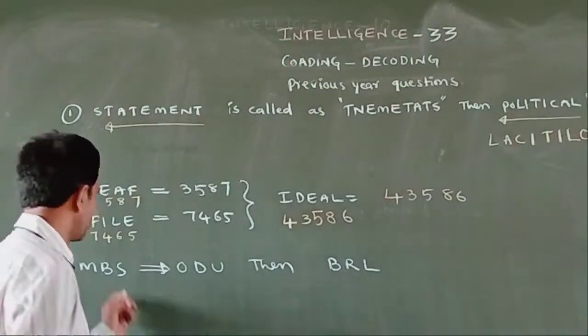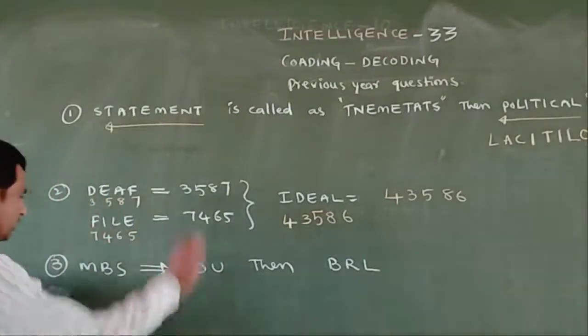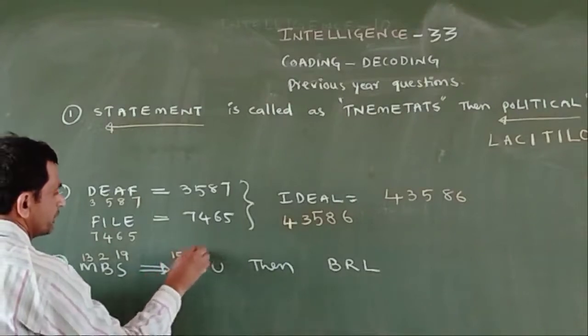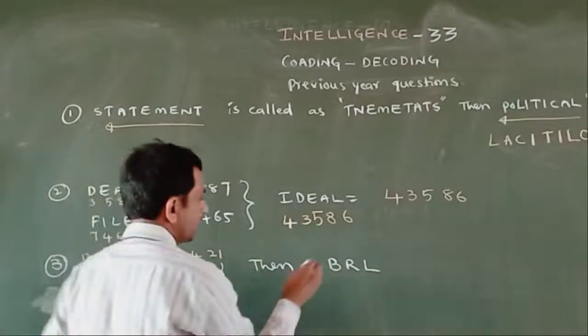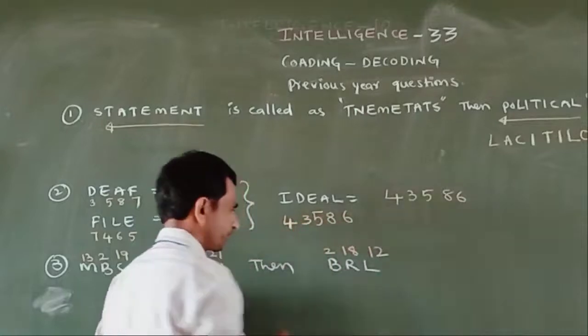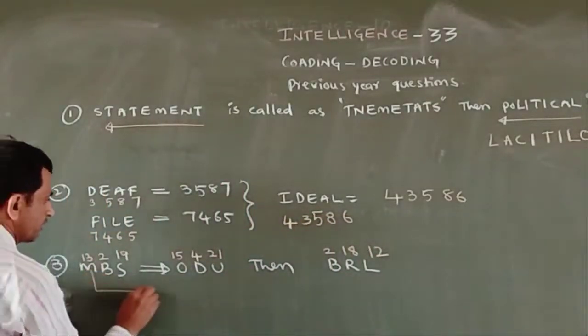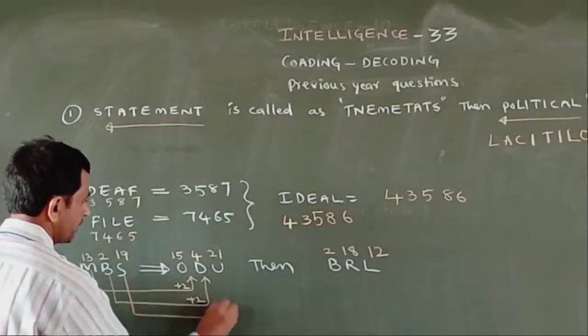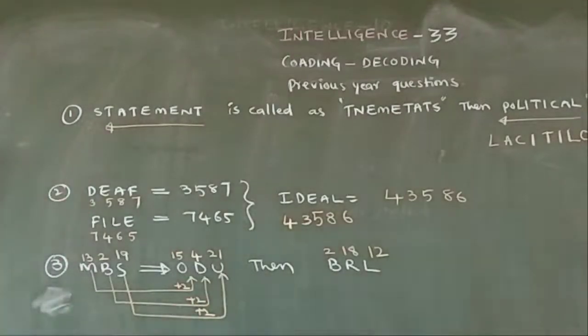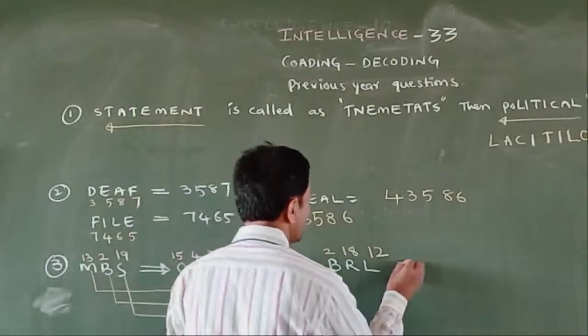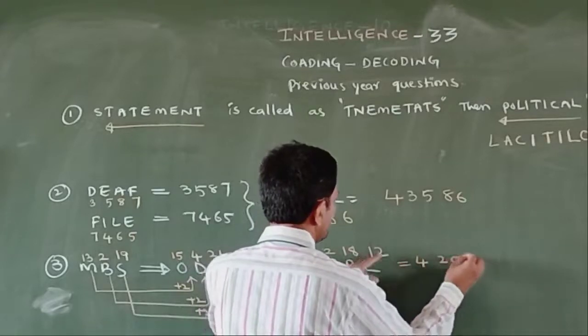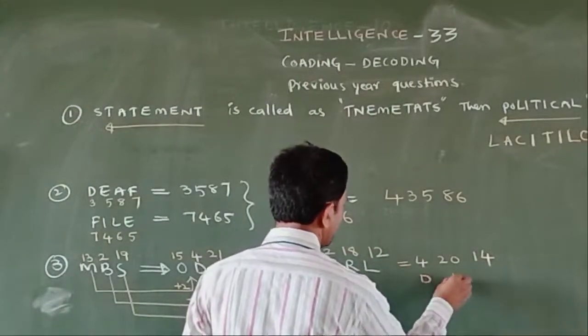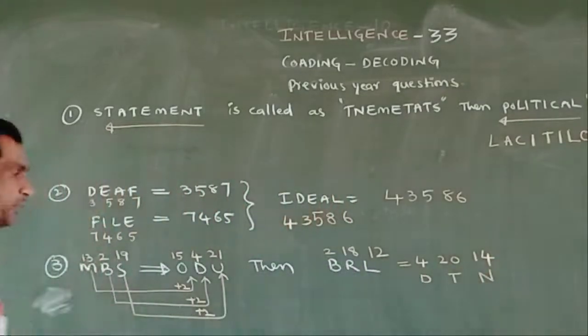Next, MBS is written as ODU, then VRL how will it be written? M is 13, B is 2, S is 19. O is 15, D is 4, U is 21. V is 22, R is 18, L is 12. 13 to 15 is plus 2, 2 to 4 is plus 2, 19 to 21 is plus 2. So plus 2 pattern follows.